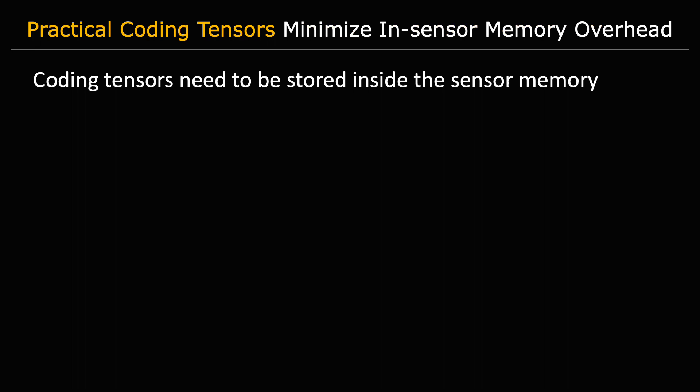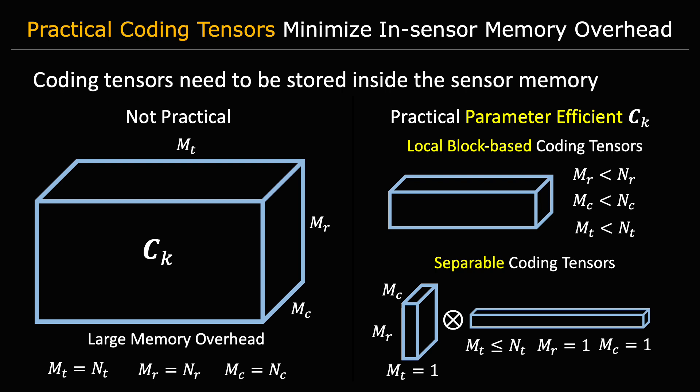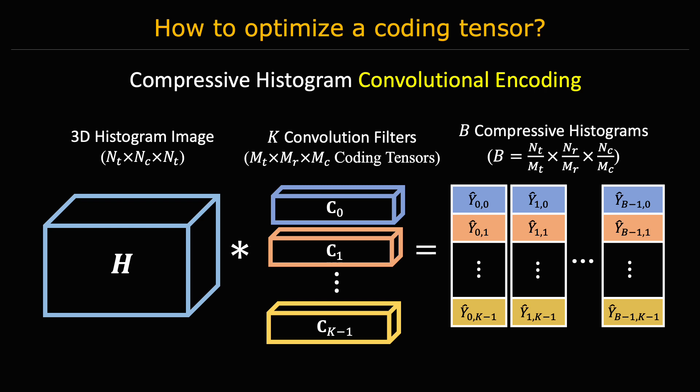In order to build a compressive histogram in-sensor, the coding tensor weights need to be stored in sensor memory. Therefore, large coding tensors will be impractical due to the memory overhead they introduce. In this paper, we explored different strategies to reduce the memory overhead, which included restricting coding tensors to be small, local, block-based, and also separable. Finally, to optimize the coding tensor parameters, we implemented them as a layer of a 3D CNN and presented a method that allows integrating it as the first layer of existing SPAD data processing CNNs.